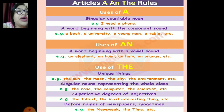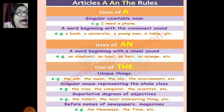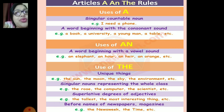Some more uses of 'a': with a singular countable noun — for example, I need a phone. A word beginning with consonant sounds always has 'a' before it, like a book, a university, a young man, or a table. For 'an', before the vowel sound — as already explained, this is a revision: an elephant, an hour, an air, or an orange. Before the vowel sound we use 'an', and before consonant sound we use 'a'.